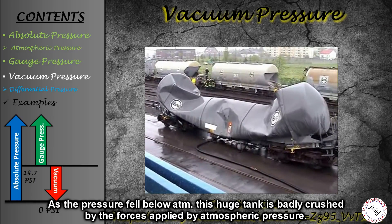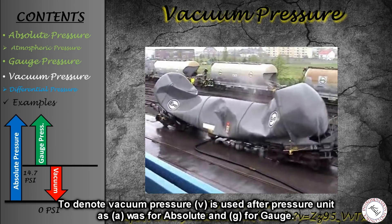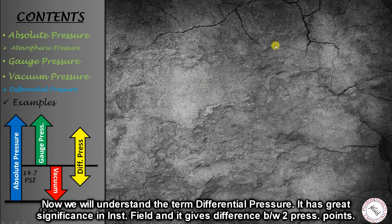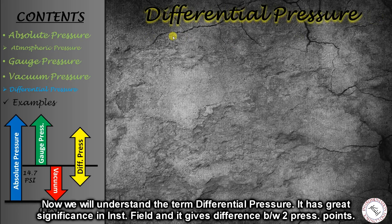To denote the vacuum pressure scale, just as we added 'A' for absolute and 'G' for gauge, we add 'V' for vacuum — for example, psiv. Now we have another terminology: differential pressure. Differential pressure is the difference between two different pressure points. In the field of instrumentation, differential pressure is used very frequently and is very significant.